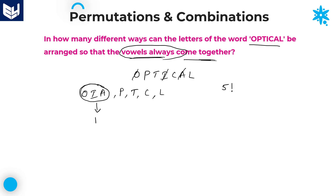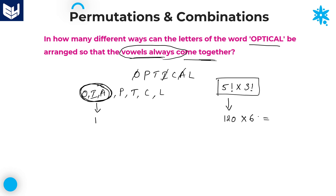Again, within this single entity we have three different vowels. These three vowels can be arranged in 3 factorial ways within the single entity. So our required answer is 5 factorial into 3 factorial. 5 factorial is 120, and 3 factorial is 6. So 120 into 6 equals 720. 720 is the required answer for this question.